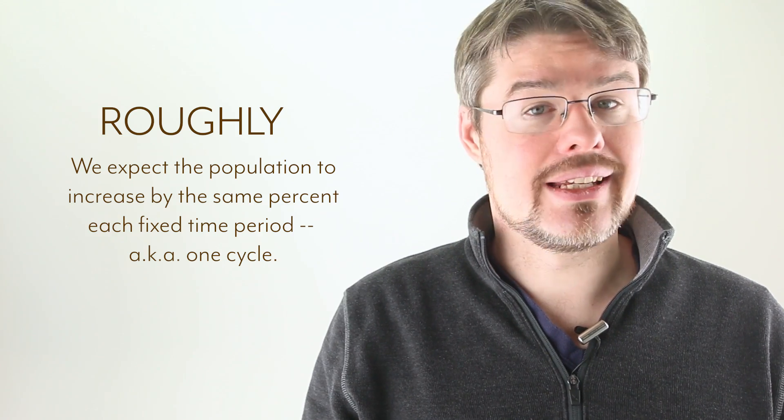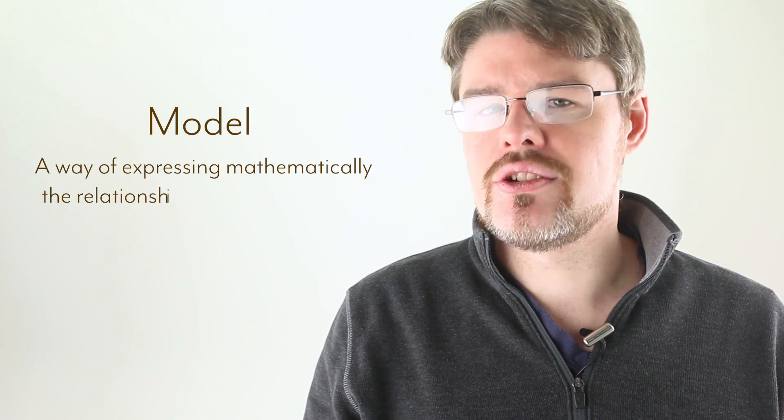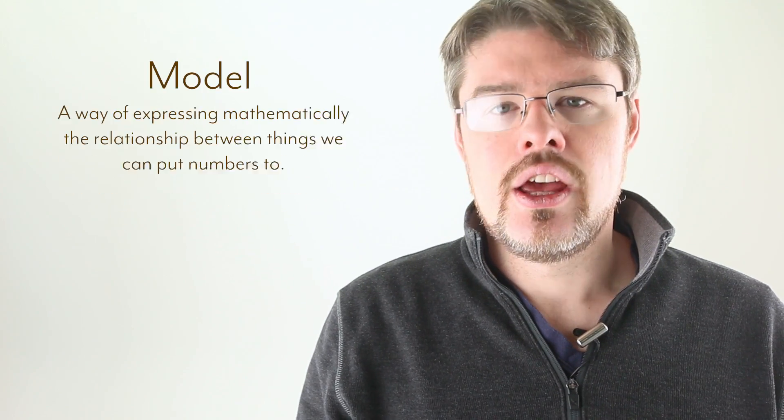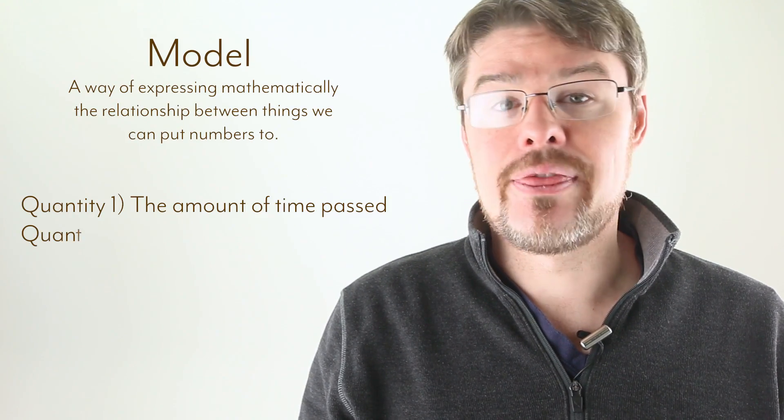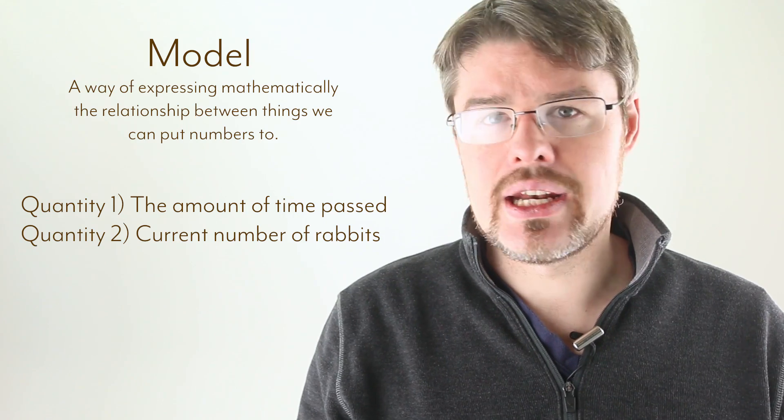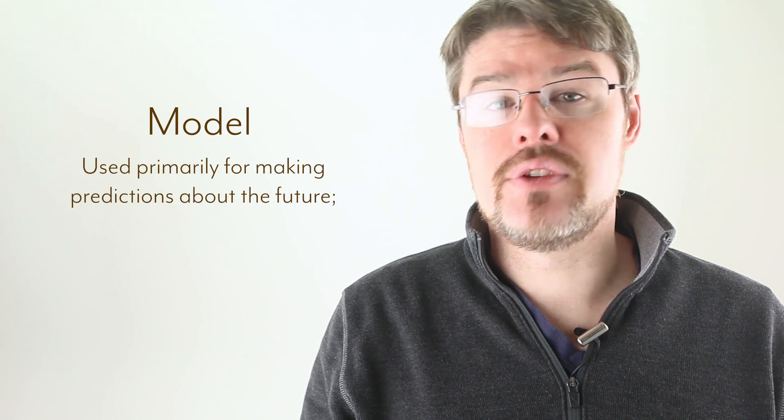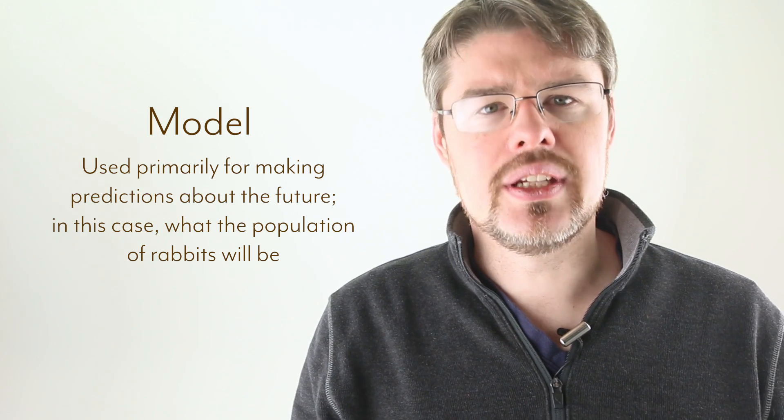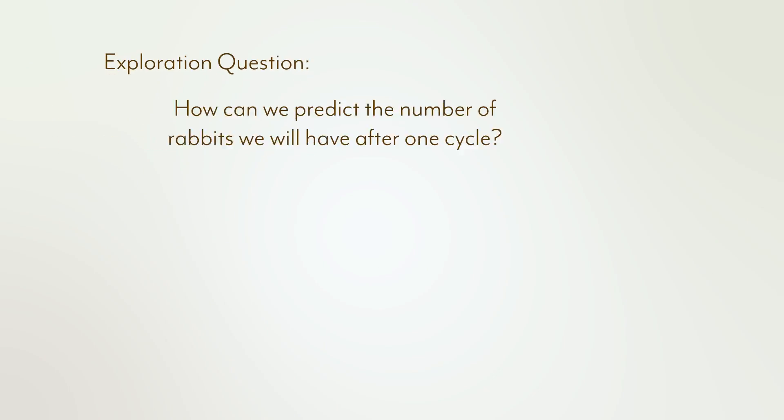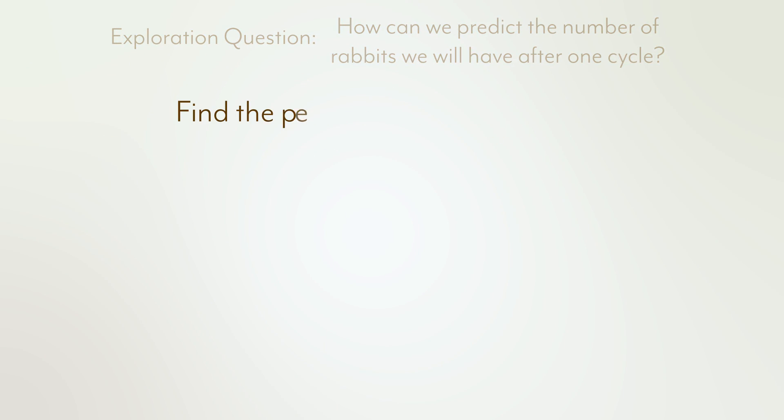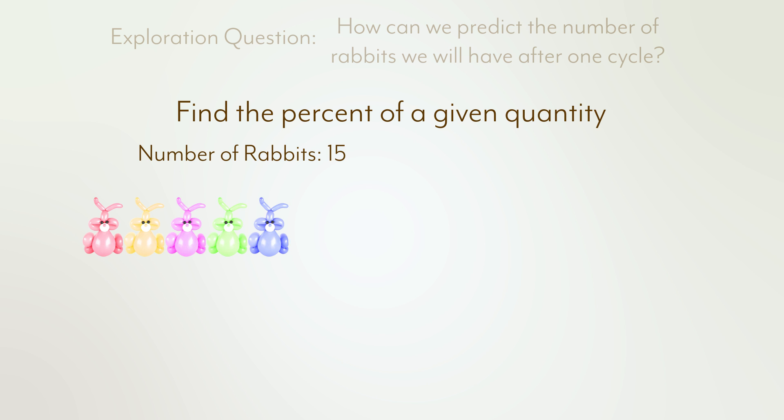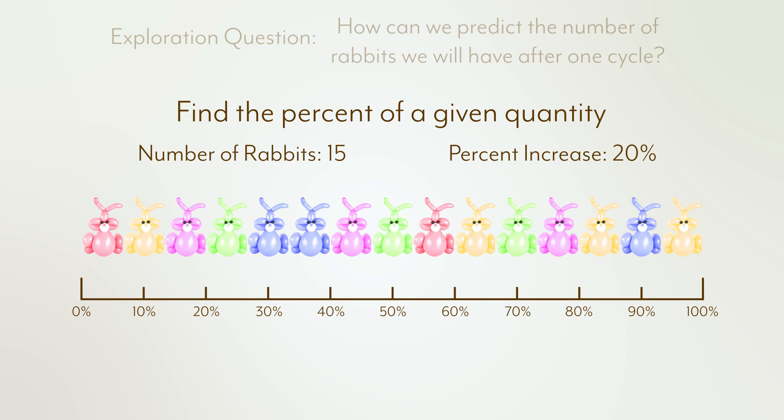What we're hoping to get from this is a model. A way of expressing mathematically the relationship between things we can put numbers to. And in this case, those are the amount of time that's passed and the current number of rabbits. We use models for many things. But in this case, we want to make predictions about the future population counts of this system. To build one, let's ask a few questions that will guide our exploration. How can we predict how many rabbits we will have after one cycle? Let's remind ourselves of how we can find the percent of a given quantity by making up some numbers for this one situation.